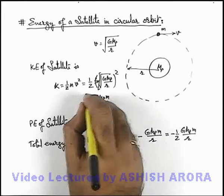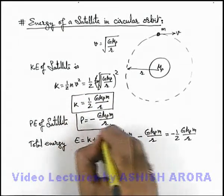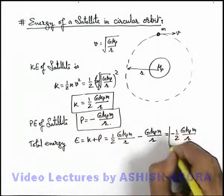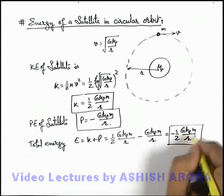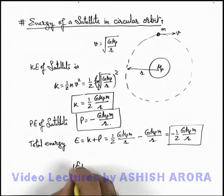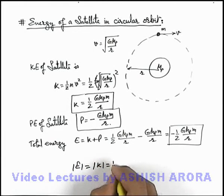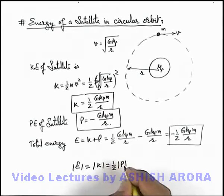So kinetic energy is ½GMpm/r, potential energy is -GMpm/r, and total energy is -½GMpm/r. Relating the three, we can write that |E| = |KE| = ½|PE|.